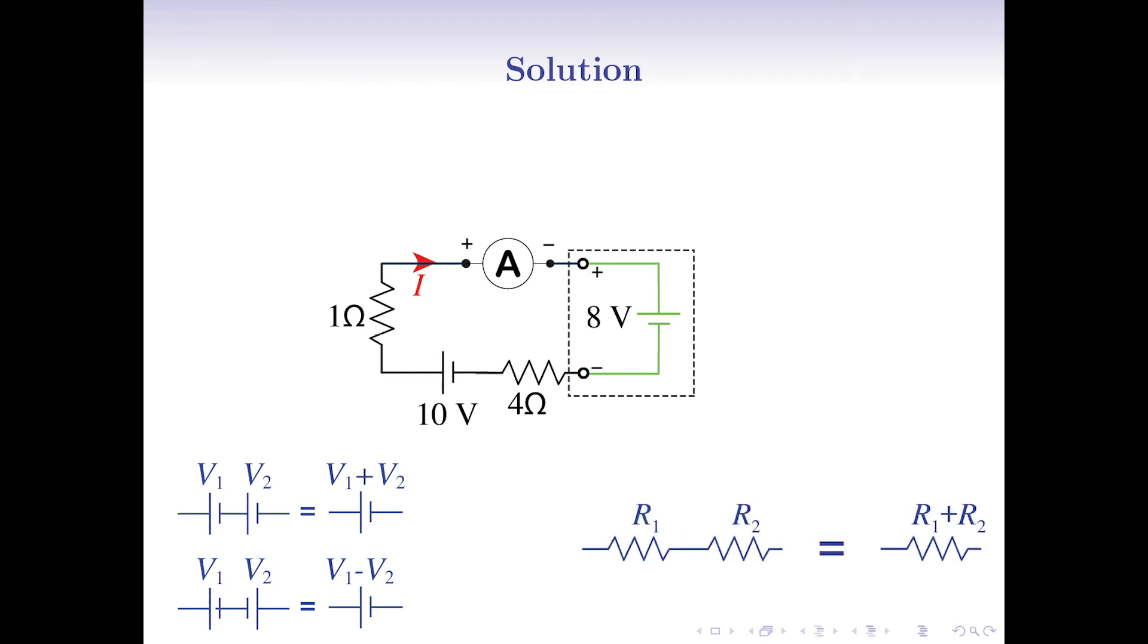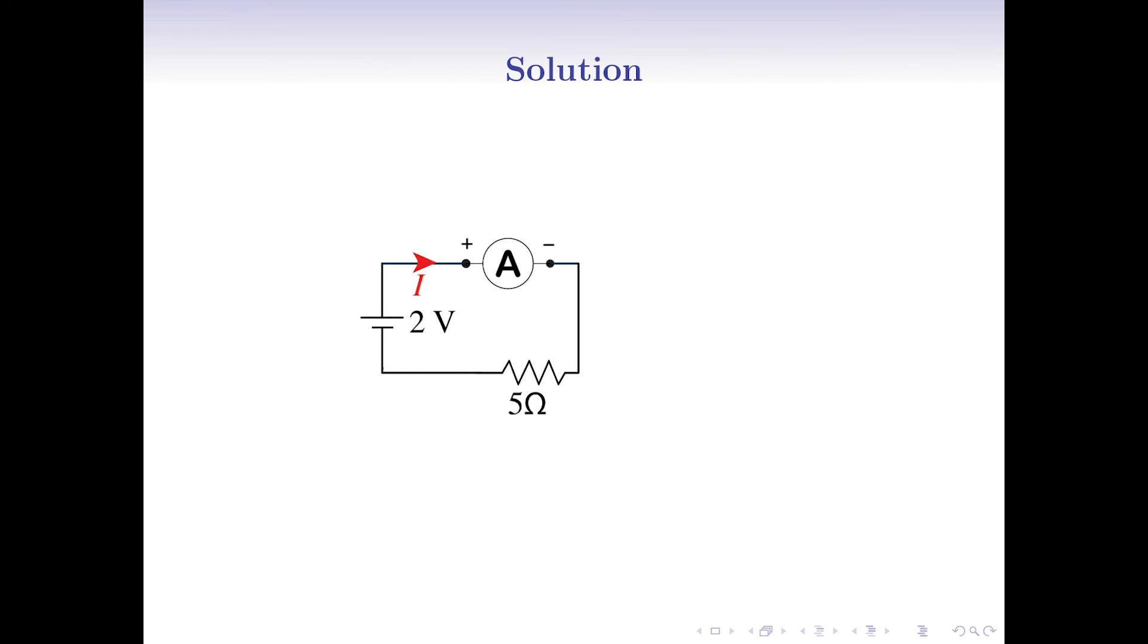Remember that the resultant resistance of a series connection of many resistances is the sum of all of them. Now, we have a very simple circuit considering that the ammeter is a short circuit.